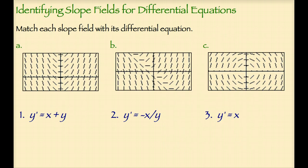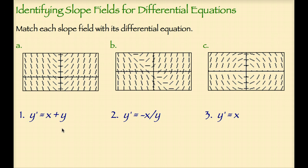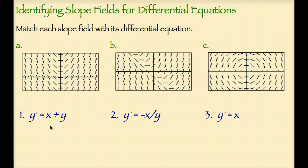Now let's try to match each slope field with its differential equation, starting with number 1: y' equals x plus y. This means that the slope at each of the ordered pairs in the coordinate plane would be the x-coordinate plus the y-coordinate. So at the point 0, 0, we would expect the slope to be 0 plus 0, which is 0. At the point 1 comma 1, we would expect the slope to be 1 plus 1, which is 2. One of the easier things to find in a slope field is the places where the slope is 0. When these two numbers are the same but opposite signs, we would get a slope of 0. For example, at the point negative 1 comma 1, we would expect to see a slope of 0, and at the point 1 comma negative 1, we would also expect to see a slope of 0.